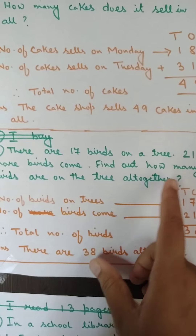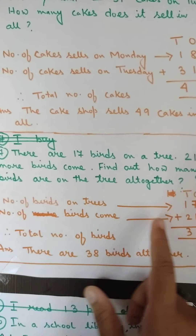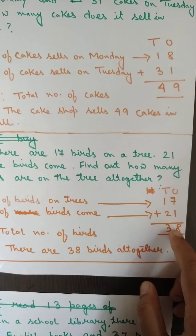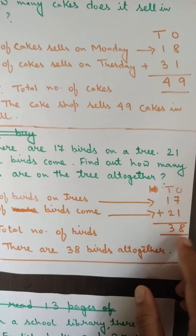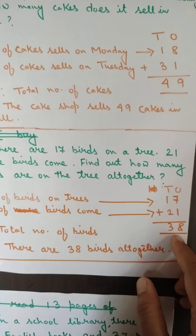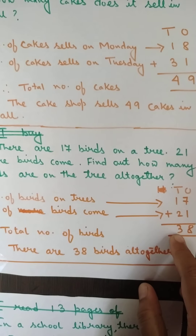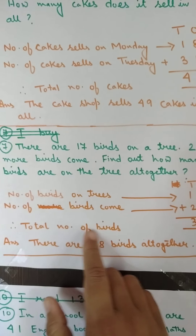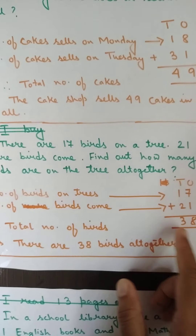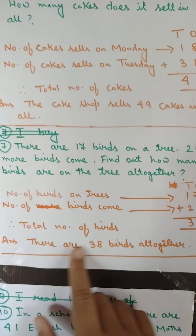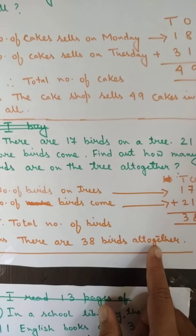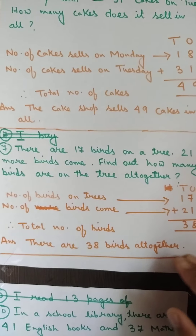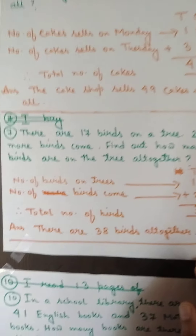There are 17 birds, and 21 more birds came. Now I have added: 1 plus 7 comes to 8, and 2 plus 1 comes to 3. So my answer is 38. Therefore, the total number of birds are 38. Answer: There are 38 birds altogether. After you finish, draw one ending line.